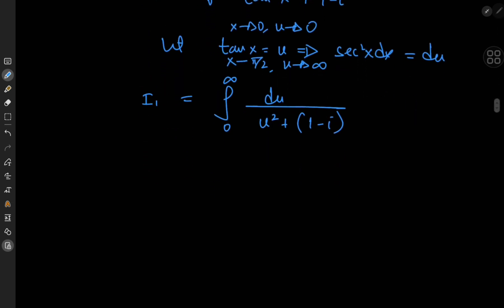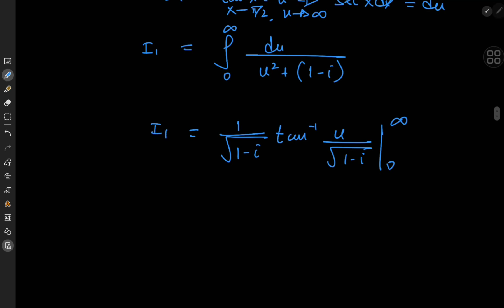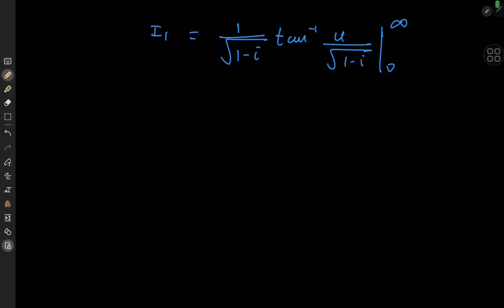This is just a very simple inverse tangent structure, which gives 1 over √(1 minus i) times the inverse tangent of u divided by √(1 minus i), evaluated with limits 0 and infinity. Now the evaluation of these limits is pretty interesting because we're dealing with the inverse tangent function from complex analysis, not the one from real analysis. The first thing I'd like to do is convert this √(1 minus i) term into polar form.